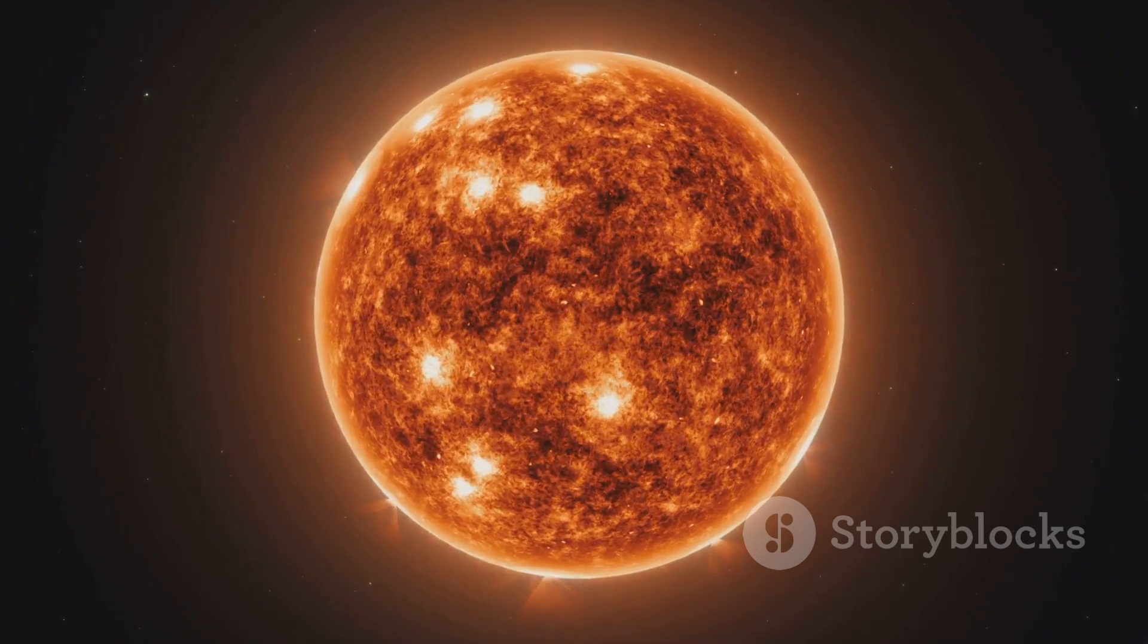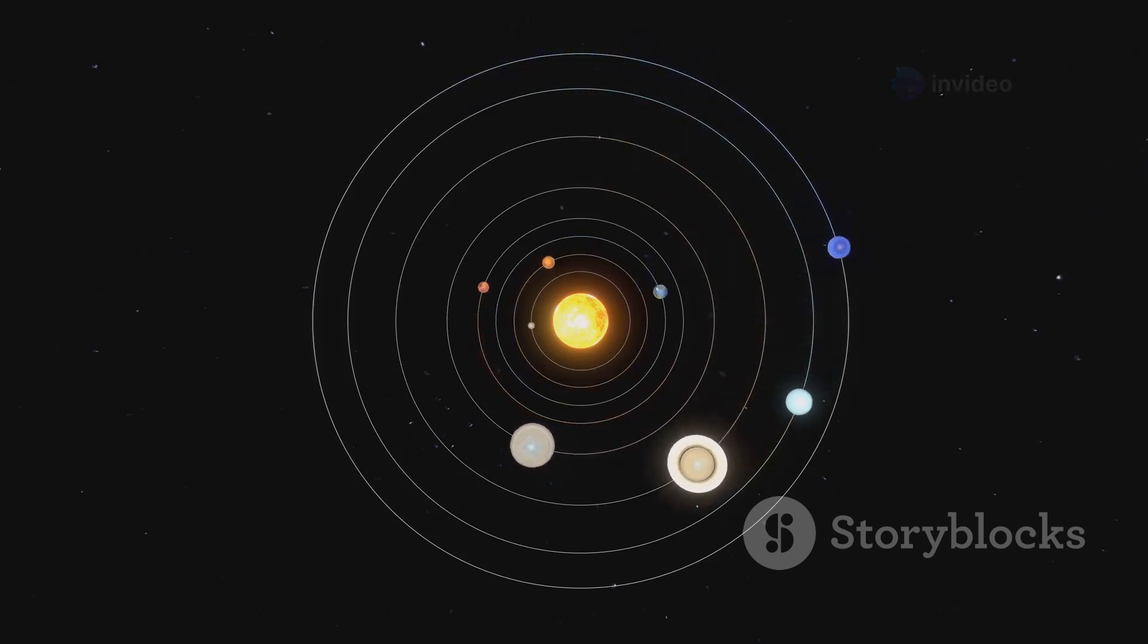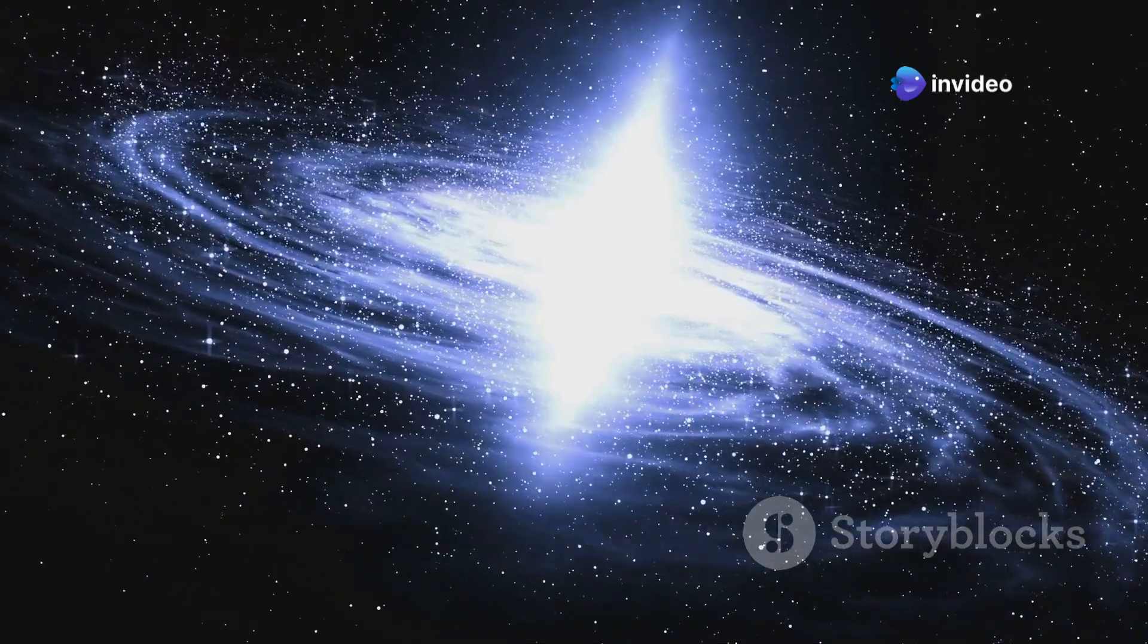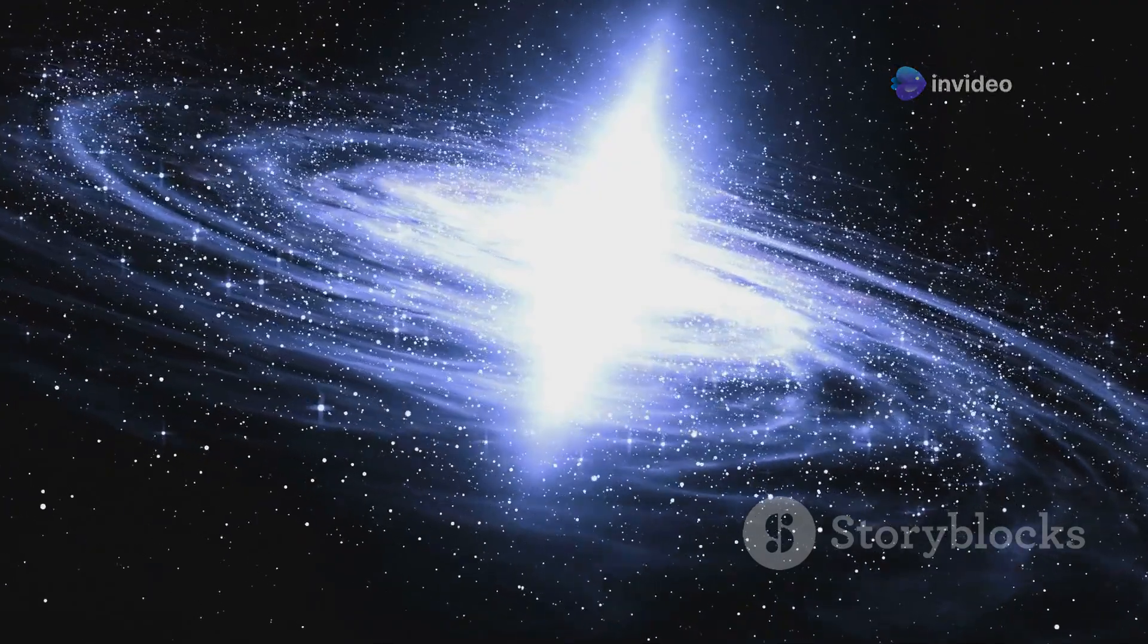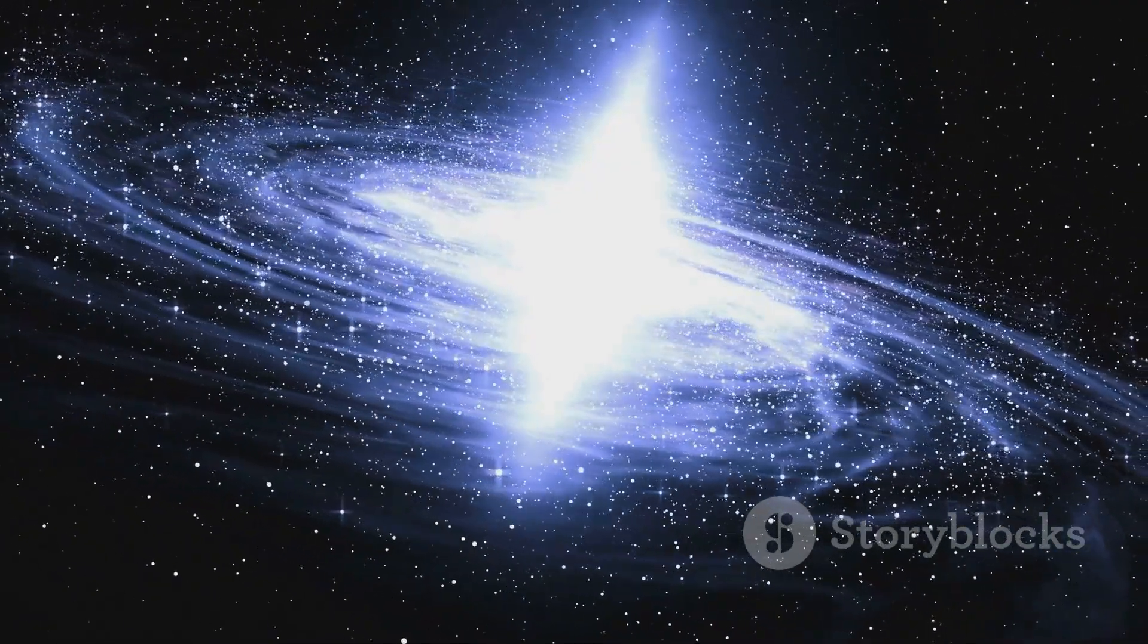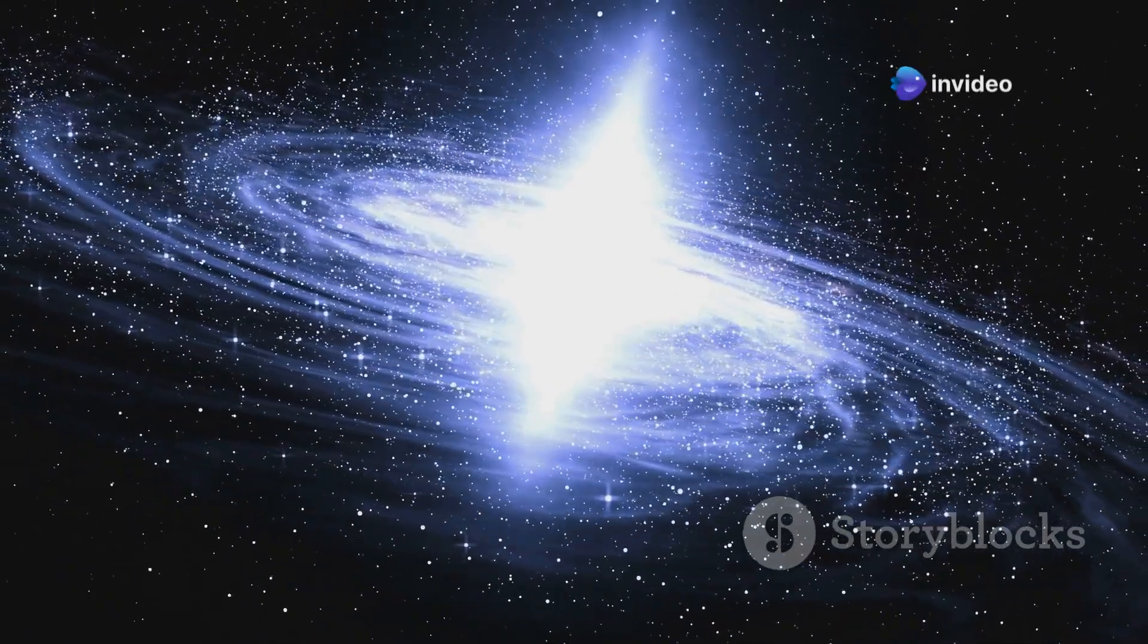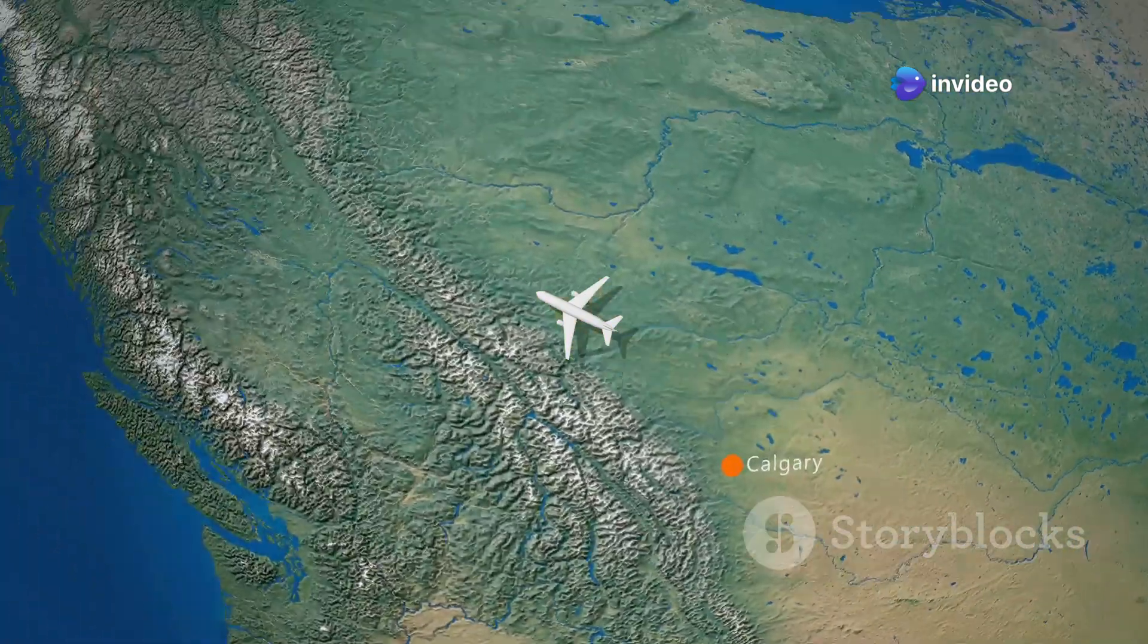To put that into perspective, if UY Scuti were placed in the center of our solar system, it would engulf the orbits of Mercury, Venus, Earth, Mars, and even Jupiter. If you could place UY Scuti at the center of our solar system, its outer layers would extend beyond the orbit of Jupiter. This means that the star's radius is so vast that it would cover a distance of over 778 million kilometers. It would take light over seven hours to travel around the circumference of UY Scuti, considering that light travels at a speed of approximately 300,000 kilometers per second. This gives you an idea of just how enormous this star truly is. That's longer than it takes to fly across the United States. Imagine a journey that long, but instead of an airplane, it's a beam of light traveling around a single star.